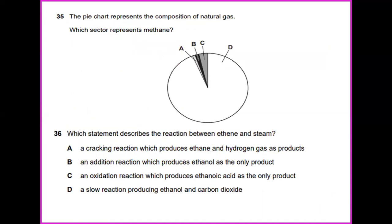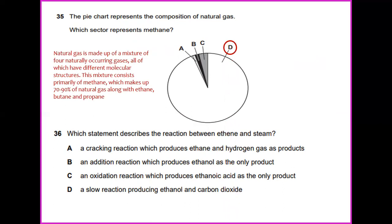The pie chart represents the composition of natural gas. Which sector represents methane? Natural gas is made up of a mixture of four naturally occurring gases, all of which have different molecular structures. The mixture consists primarily of methane, which makes up 70 to 90 percent of natural gas along with ethane, butane, and propane. So the answer would be D. D actually has a lot of space occupied by the natural gas, about 70 to 90 percent.